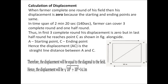In a time span of 140 seconds, the farmer covers three complete rounds and one half round. In the first three complete rounds, displacement is zero because he comes back to the starting point. But in the last half round he reaches point C. The starting point of the farmer is A and the ending point is C, so we need to calculate AC, which is the diagonal of the square. By applying Pythagoras' theorem, the displacement AC can be calculated.